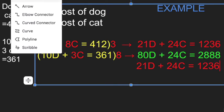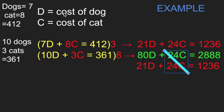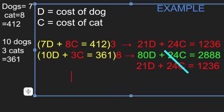24 minus 24, that will cancel, and that's what we want to do: create the shadow clone and then poof, make them disappear. 80 minus 21 is 59. 59 times the price of a dog equals 2888 minus 1236 is 1652.